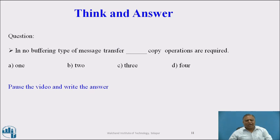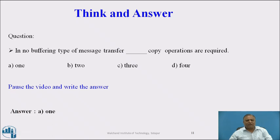Pause the video and write the answer. In no buffering type of message transfer, how many copy operations are required? Options are 1, 2, 3, or 4. Choose any one option among these four options. The answer is A — 1. In no buffering type of message transfer, 1 copy operation is required.